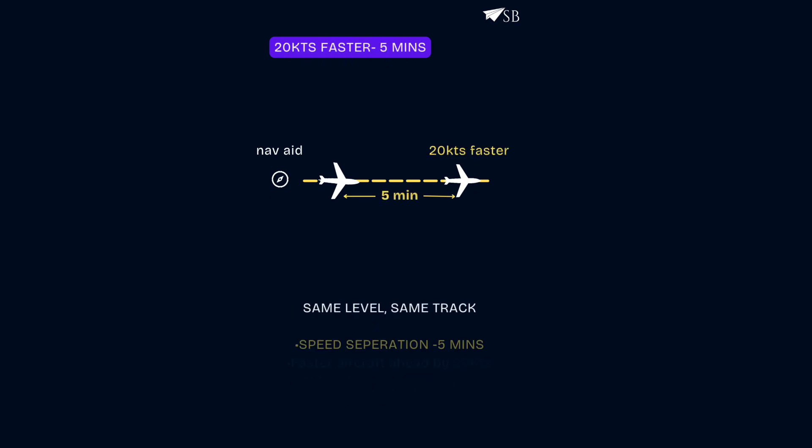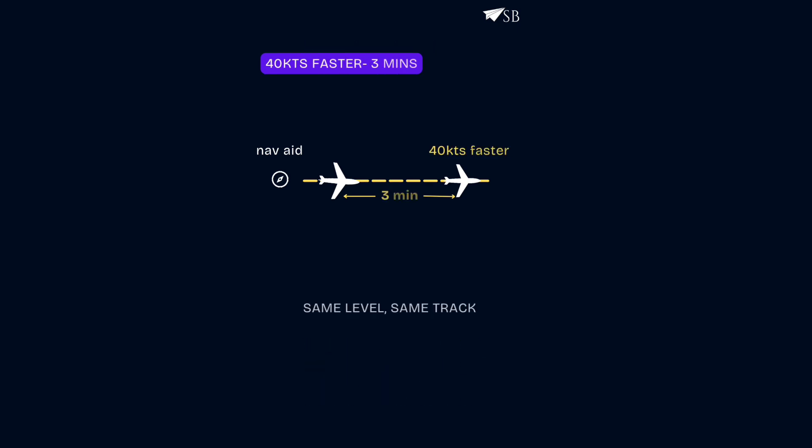Speed-based separation: 5 minutes if the leading aircraft is 20 knots faster, and just 3 minutes if it's 40 knots faster.